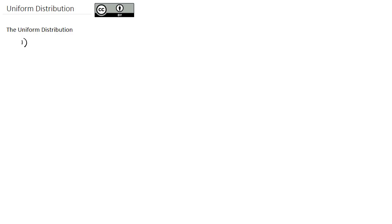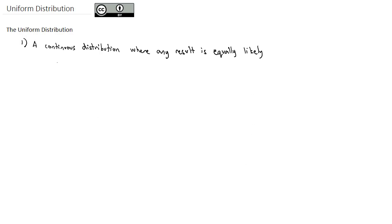The most basic continuous distribution is called the uniform distribution. The uniform distribution is a continuous distribution where any result is equally likely. If we were to graph a picture of this distribution, there would be some minimum value, we'll call it A, and a maximum value, we'll call it B. The shape of this distribution would be a perfect rectangle, because any number between A and B is equally likely.